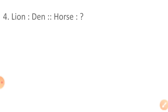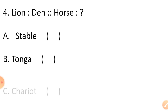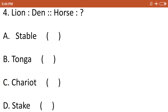Question 4: lions live in a den. Similarly, where does a horse live? Option A stable, option B tonga, option C carriage, and option D steak. A den is the house of a lion, and a stable is the house of a horse. So our correct option is option A, stable.